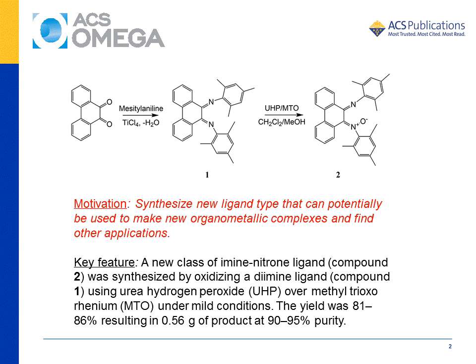The second step used the urea hydrogen peroxide / methyltrioxorhenium (UHP-MTO) system to oxidize compound 1 to the bis-mesityl-phenanthridine imine-nitrone, which is labeled as compound 2. This reaction takes place under mild conditions with very good yield.